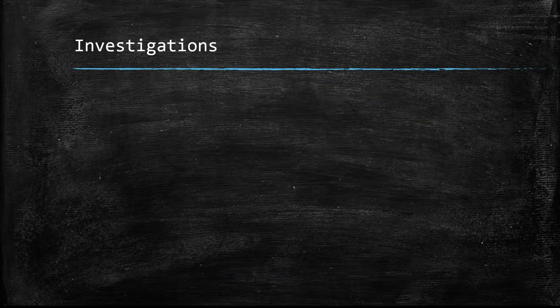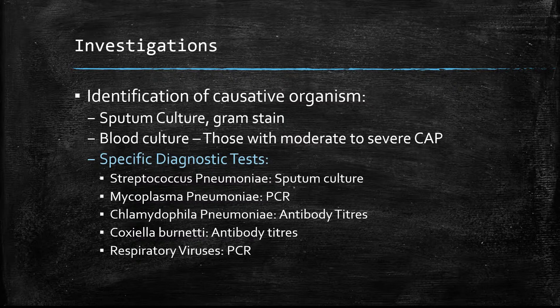To identify what organisms are causing the pneumonia, we commonly take a sputum gram stain. We often take blood cultures as well, and there are also specific diagnostic tests to help identify the possible organism. We need to know this because it guides our management.